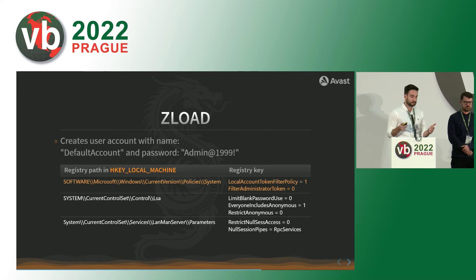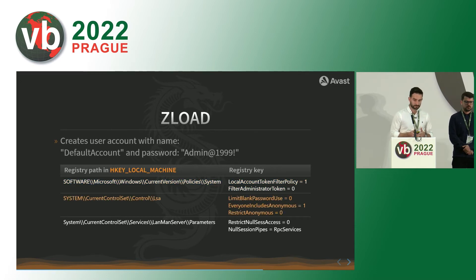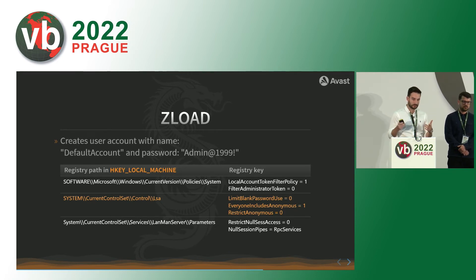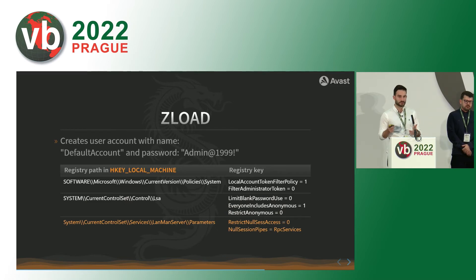It then lowers the system protection through registry manipulation. Step by step: first it disables UAC remote restrictions, then it disables the UAC mechanism for the built-in administrator account, then it enables empty passwords on the network. It also adds Anonymous SID to the Everyone Windows group, allowing the anonymous user to list all account names and enumerate all shared resources. Finally, it allows new session users to access named pipes.